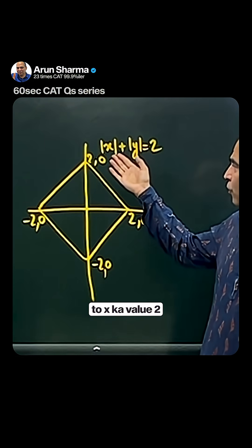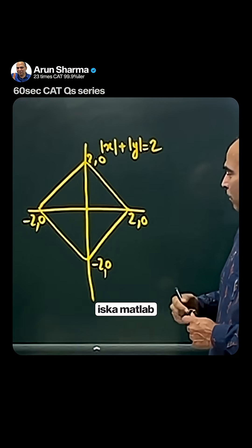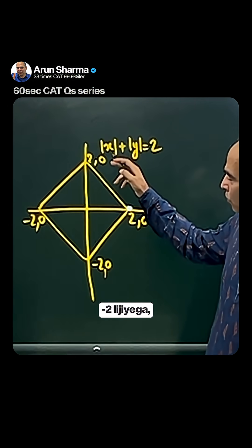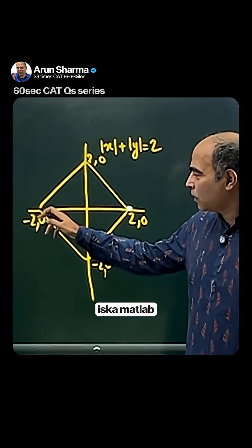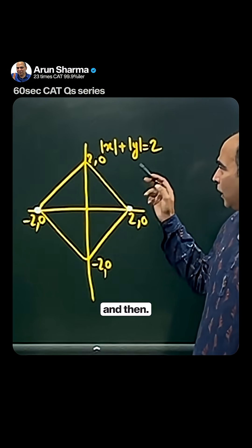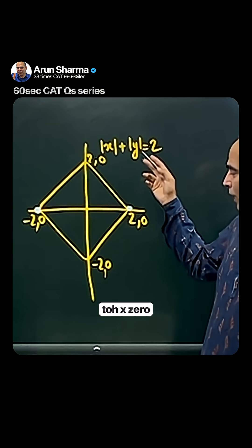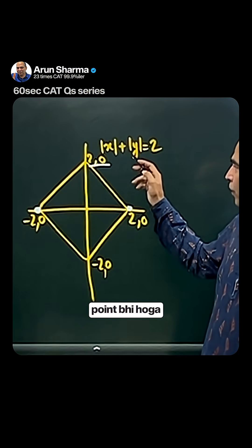This means this point will be here. If x value is minus 2, then y value will also be 0, so this point will be here. And if y is 2 and x is 0, then this point will be here. If y is minus 2 and x is 0, this is also a point.